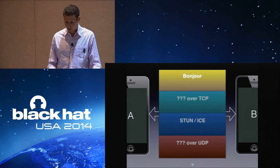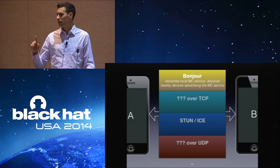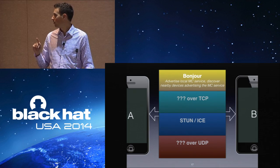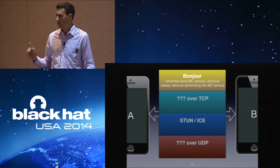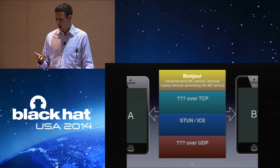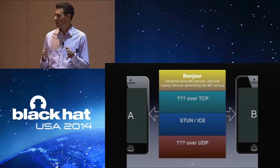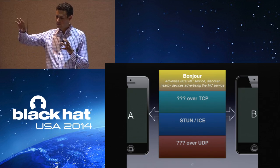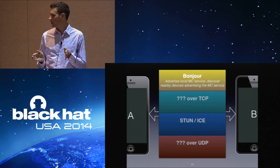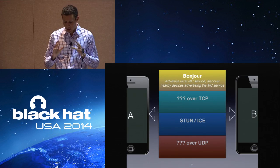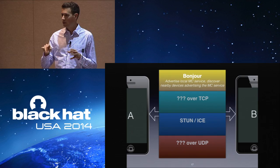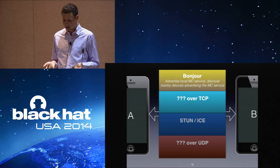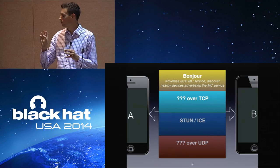I'll briefly talk about the two well-known protocols — if you want more details you can look them up online. The first protocol you'll see is called Bonjour — it's an Apple technology used to find services on the LAN. That's how your Mac finds a printer on the LAN, and that's what multi-peer connectivity is using to find phones around. Your app basically advertises a Bonjour service — you just have to choose a name, so for example the FireChat app chose the name FireChat. Nearby devices can find it, and once they do, they get the IP address and TCP port to connect to that service.